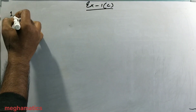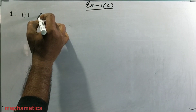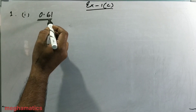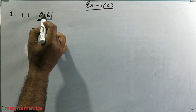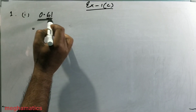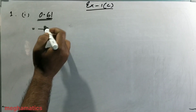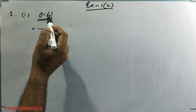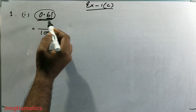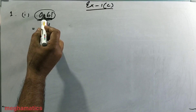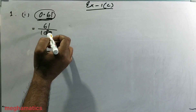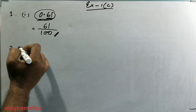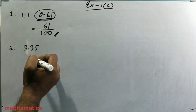In question number one, the question is 0.61 — this is a decimal and we have to convert it into a fraction. First, we see how many digits are after the point — here there are two digits. So in the denominator we put 1 followed by two zeros, giving 100. Then we write the number without the point, which is 61. Since removing the point makes the leading zero valueless, we don't write it. So the fraction is 61 by 100.